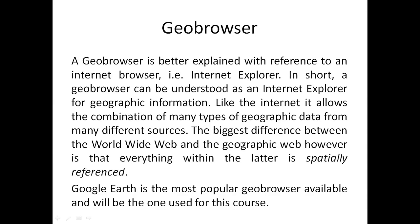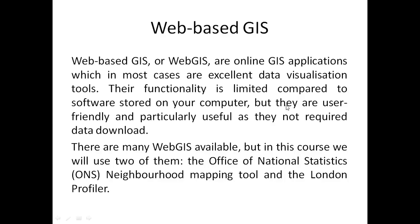The biggest difference between the World Wide Web and a geographic web browser is that everything within the latter is spatially referenced. Google Earth is one important geo-browser. Web-based GIS — also called web GIS or online GIS — applications are excellent data visualization tools, though their functionality is limited compared to desktop software. They are user-friendly and particularly useful as they do not require data download; data can be accessed through HTTP. We will introduce the ONS Office for National Statistics neighborhood mapping tool and the London Profiler. Thank you — I hope you now have a good idea of what GIS is, why it is important, and what the different types of GIS are.